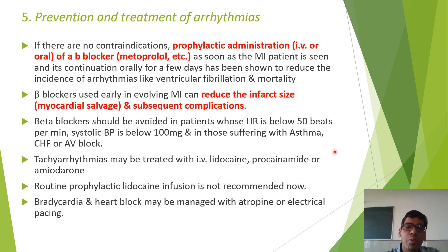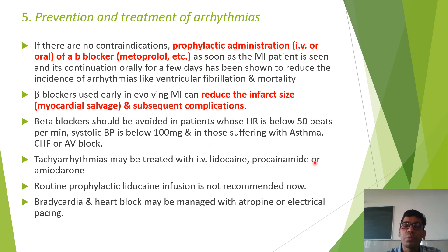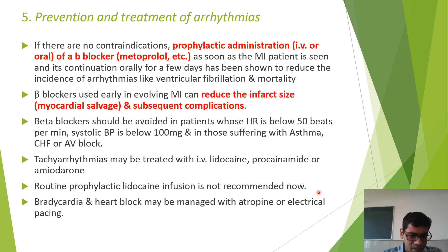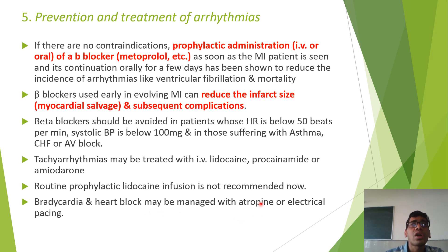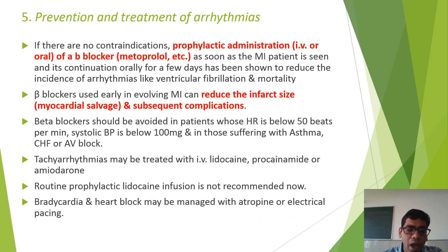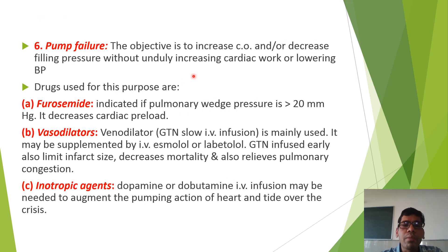Tachyarrhythmia may be treated with IV lignocaine, procainamide, or amiodarone, administered only if there is ECG evidence of tachyarrhythmia. Routine prophylactic lignocaine infusion, which was advocated earlier, is not recommended nowadays. For bradycardia and heart block — partial or complete — atropine can be given to increase heart rate, or electrical pacing can be used.